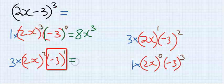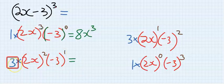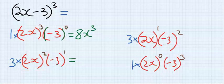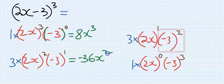Coefficient 3 times (2x)² which is 4x², times minus 3, gives minus 36x².